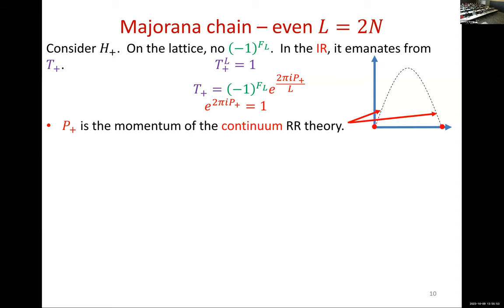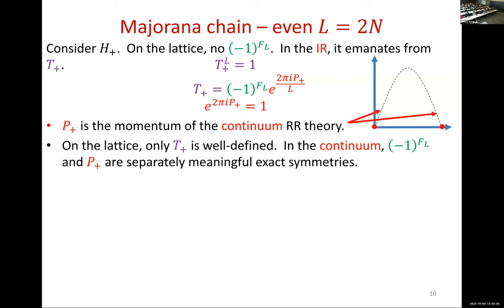On the lattice, we have only T+. But in the continuum, we have two symmetries: this internal symmetry and the continuum translation. On the lattice only the left-hand side is well defined. At low energies, each factor by itself is well defined. As long as we are sufficiently below the cutoff, it's clear whether we should assign (−1)^{F_L} as +1 or −1 depending on which end of the spectrum we're at. This separation is not meaningful for high-energy modes, but at low energies it is meaningful.